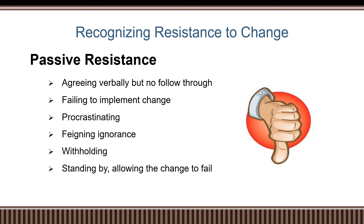Passive resistance is considered the worst type, because unlike active resistance, it is done under the table. It is when employees verbally agree that the change is necessary but do not follow through — they procrastinate, and later may feign ignorance, saying they did not know what they were supposed to do, when in fact they simply did not want to cooperate with the change the management wanted.